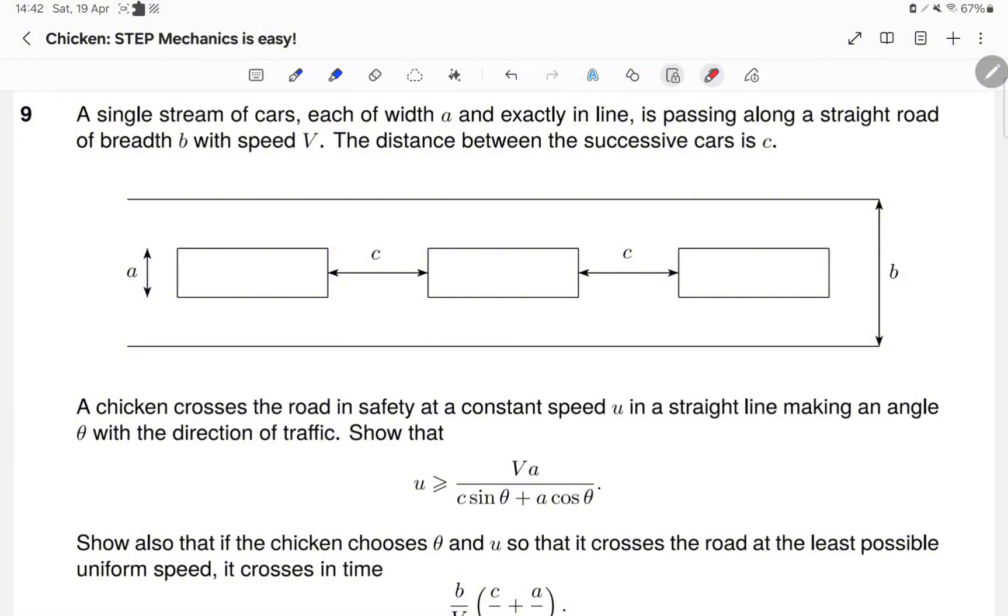Question 9. A single stream of cars, each of width A and exactly in line, is passing along a straight road of breadth B with speed V. The distance between the successive cars is C.